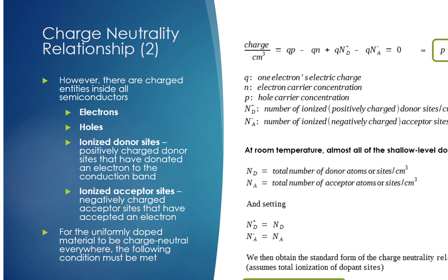However, there are charged entities inside all semiconductors. This includes electrons, holes, positively charged donor sites that have donated an electron to the conduction band, called ionized donor sites, and negatively charged ionized acceptor sites.